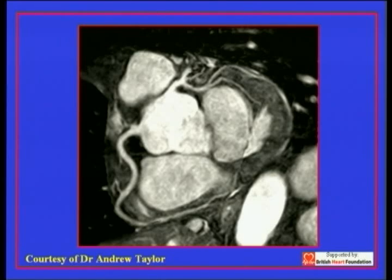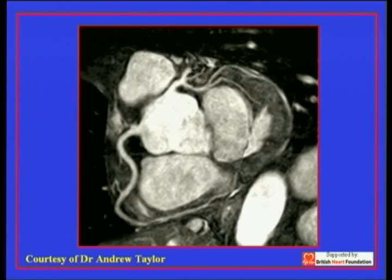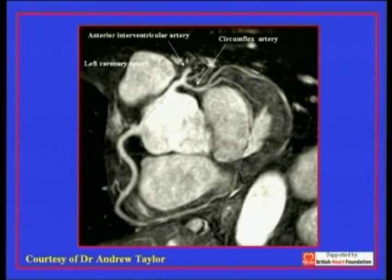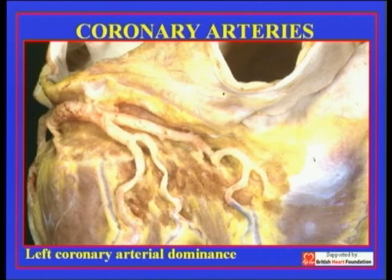Nowadays, with resonance imaging and computerized tomography, the delineation of these coronary arteries is quite exquisite. Here is another of Andrew Taylor's exquisite pictures, showing you how everything we now show in the autopsy room you can see even better during life. Tomorrow's cardiac anatomists are going to be the echocardiographers and imagers who can produce these quite exquisite views, showing the left coronary artery, anterior interventricular, the circumflex branch, and right coronary artery encircling the tricuspid valve orifice and moving round the right atrioventricular junction to the crooks of the heart, where it gives rise to the inferior interventricular branch. That is the situation in nine-tenths of the population, where it is the right coronary artery which irrigates the crooks of the heart.